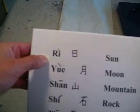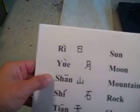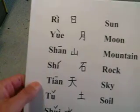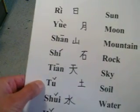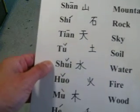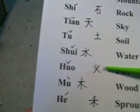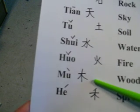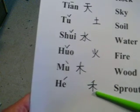月, 山, 石 — rock. 天 — sky. 土, 土 is for you. 水 — water. 火 — fire. 木 — wood. 河, 河.